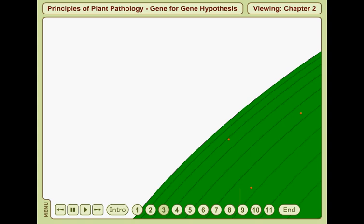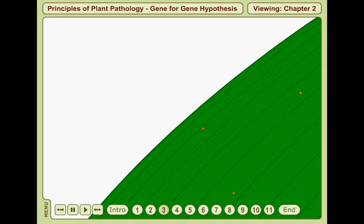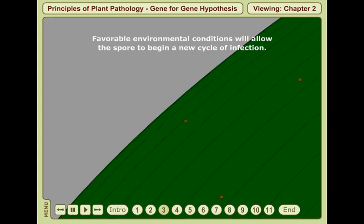After inoculation, the occurrence of favorable environmental conditions will allow the spore to begin a new cycle of infection.